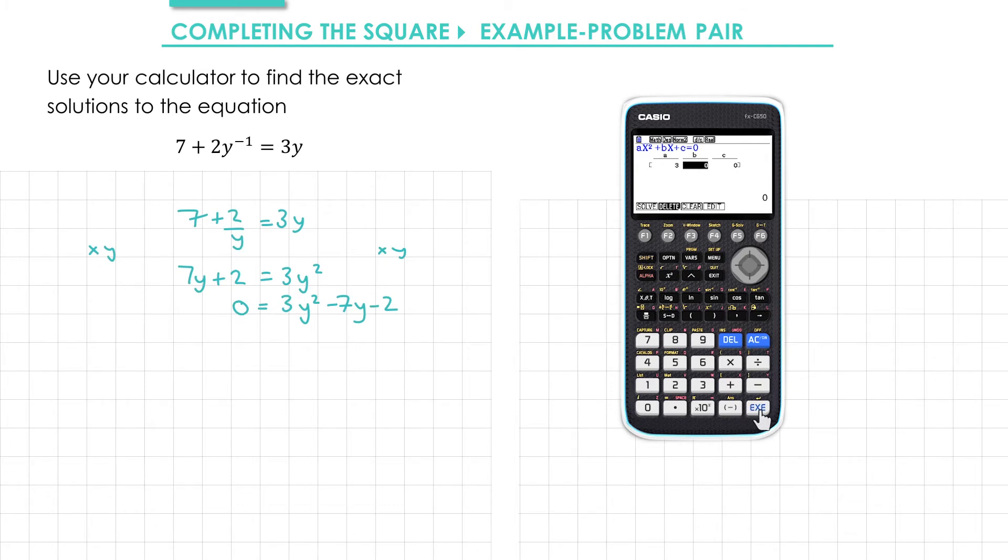Next I put my coefficients in for a, b, and c. So I press 3 equals, b is minus 7, and c is minus 2. Then I press exe and I get my answers: I get 7 plus root 73 over 6 and 7 minus root 73 over 6.